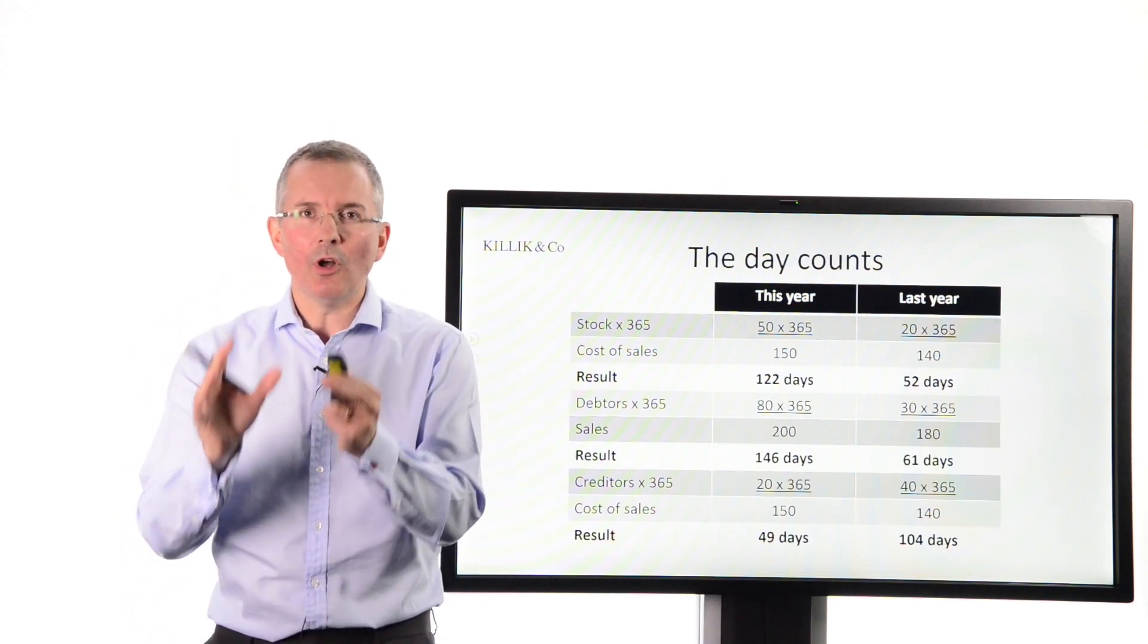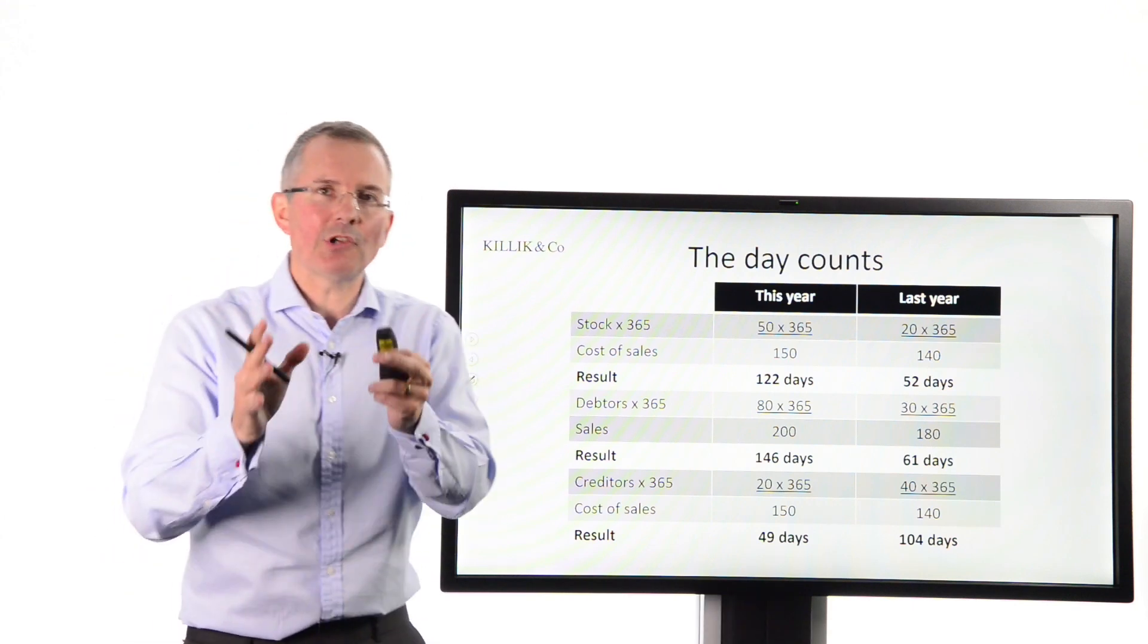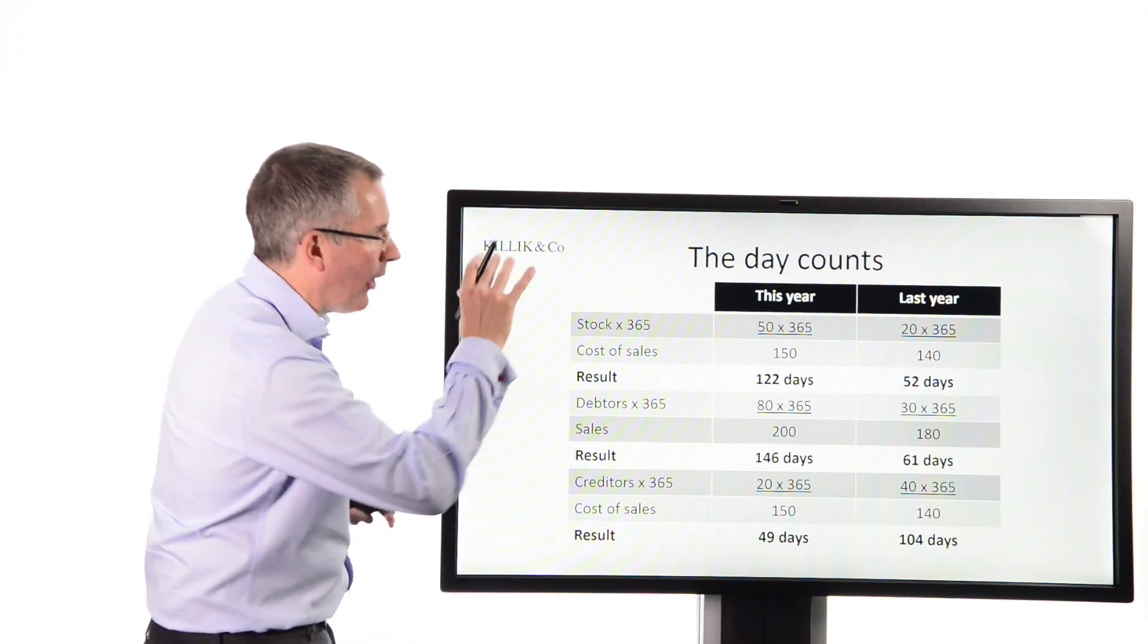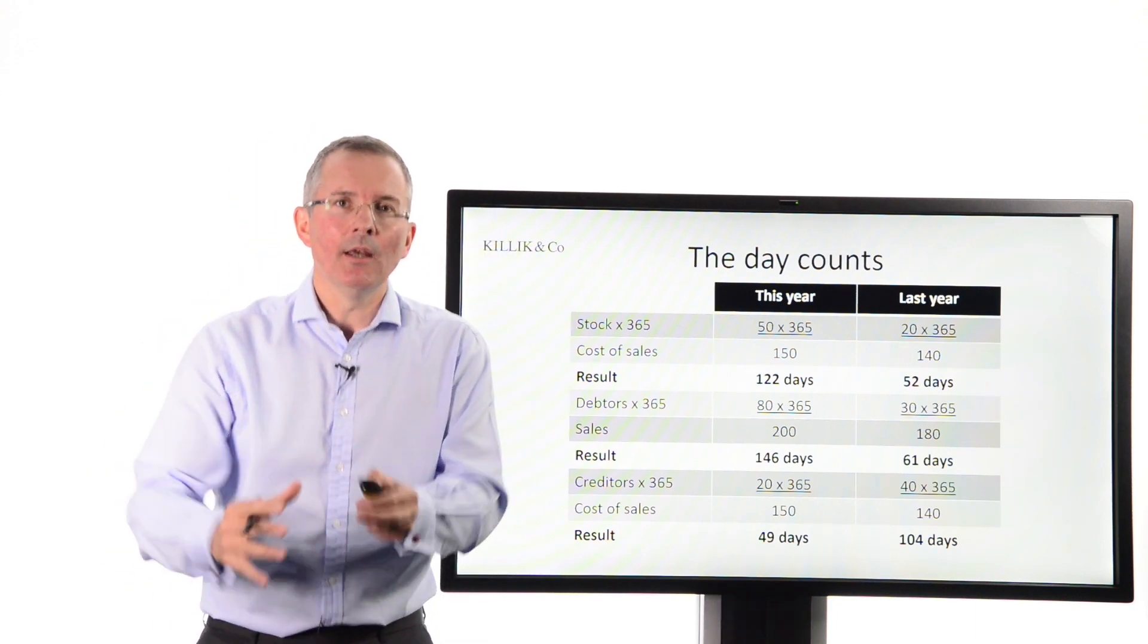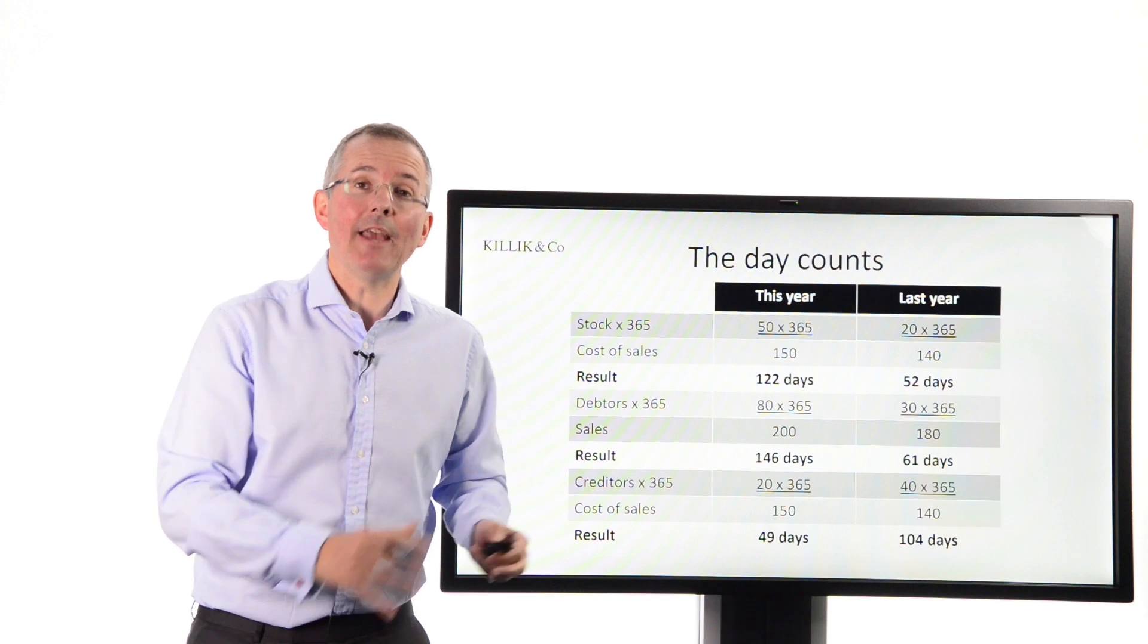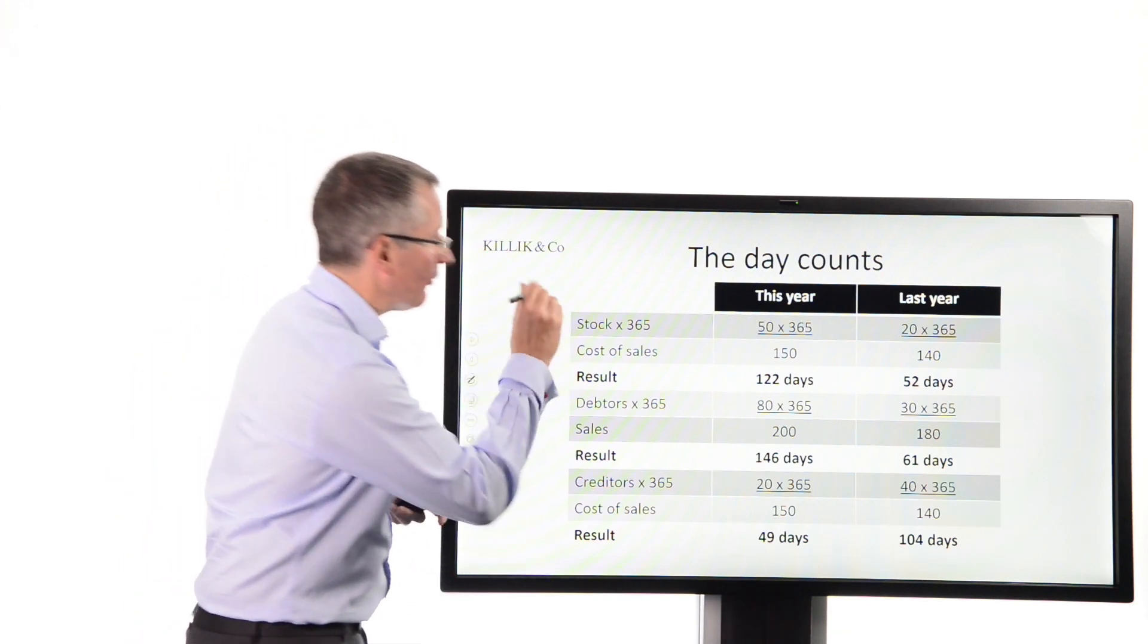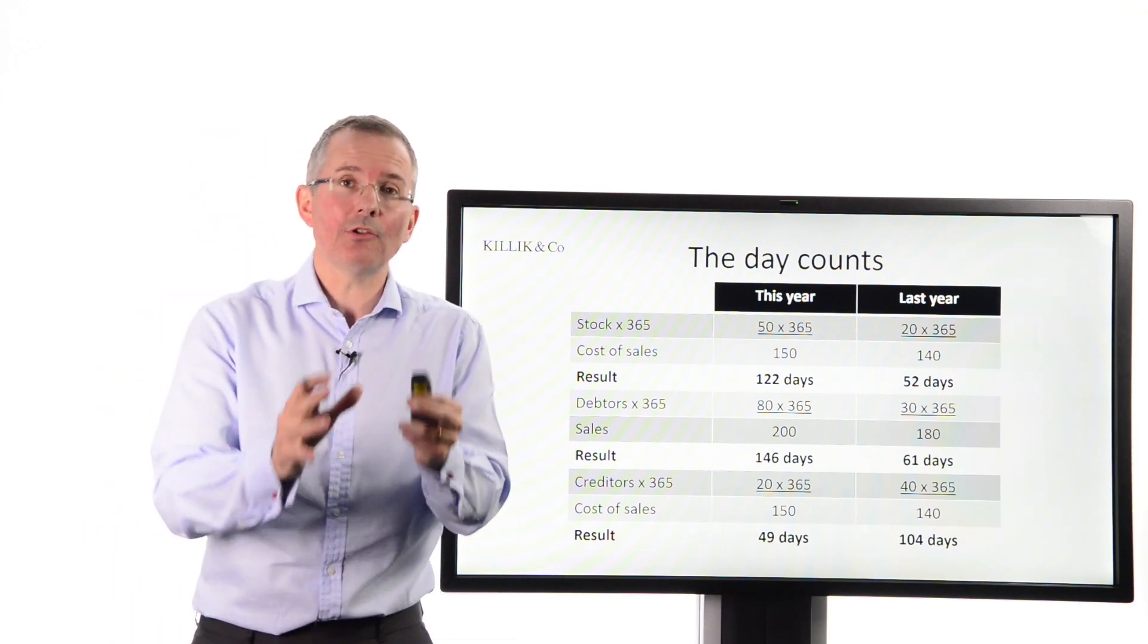I did warn you, lots of numbers, but it's really the conclusion that's more important here. This is something to watch out for and something to ask questions about if you see it happening in a business you're looking at. So, the day counts, I've called them. This is simply converting closing stock into a number of days, receivables into a number of days, and creditors into a number of days by comparing them to the relevant figure from the profit and loss account. So, for example, stock days, as I've called it. Now, I won't go through every calculation here because you're pretty bored. It's this year and last year, but the principle is the same in all these calculations.